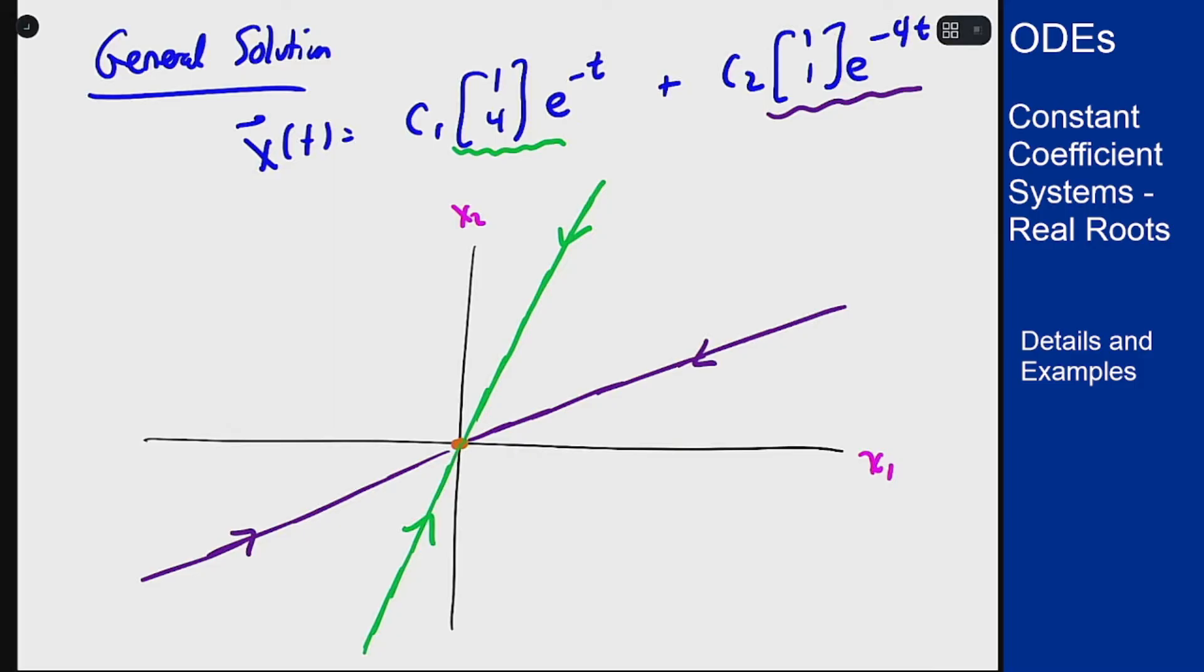If I pick them both to be 1, I get that for this particular solution my function is going to be e^(-t) + e^(-4t) and 4e^(-t) + e^(-4t), if I pick both those coefficients to be 1.